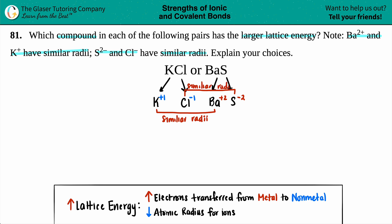Why does that matter? Lattice energy depends on two properties. One is atomic radius—smaller ions increase lattice energy. But since potassium and barium are relatively the same, and chlorine and sulfur are relatively the same, we can't determine which has higher lattice energy based on radius. So it comes down to the other property: the electrons being transferred from metal to nonmetal.